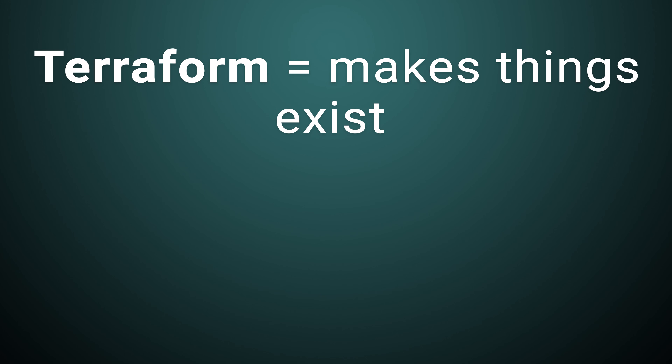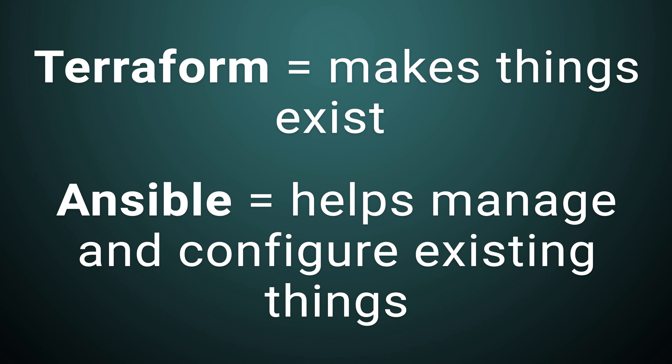As infrastructure as code utilities, Terraform and Ansible are similar in that they both attempt to automate something. In the case of Terraform, it attempts to automate the building of infrastructure — spinning up a server and possibly setting up a network, a software-defined network, security groups, firewalls, things like that. The idea behind Terraform is to make things exist. Ansible, on the other hand, takes things that already exist and helps you configure those things or manage the configuration of infrastructure components on your network.